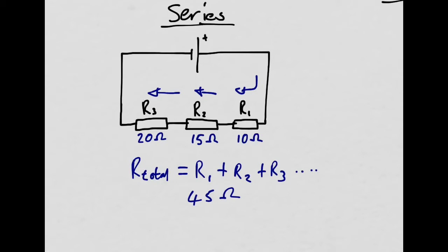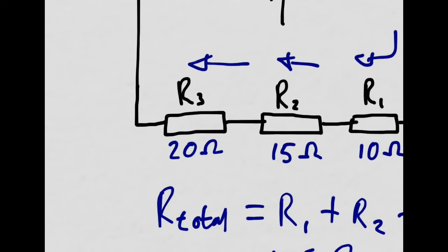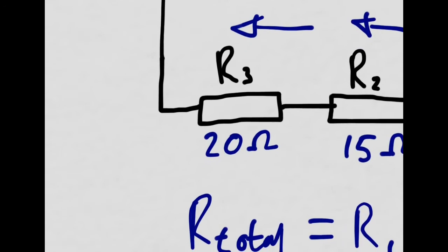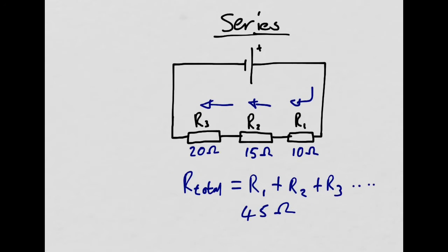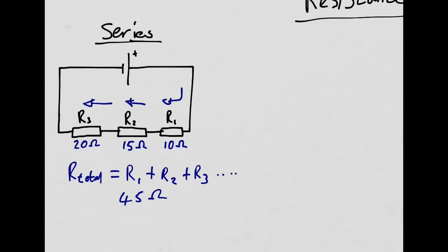How does the potential difference share itself between the three devices? The device with the biggest resistance — R3 here — is going to take the biggest share of potential difference. That's because the bigger the resistance, the harder it is to push the electrons through it, so it takes more energy and therefore more potential difference. R1 will take the least potential difference because it has lower resistance.